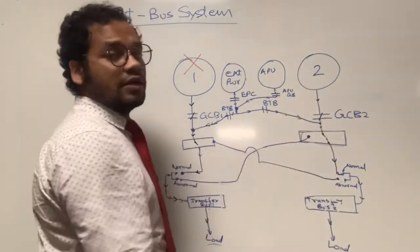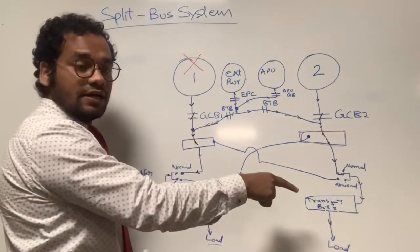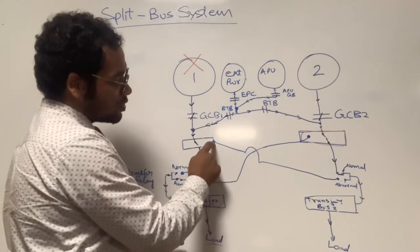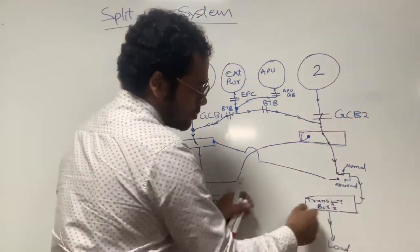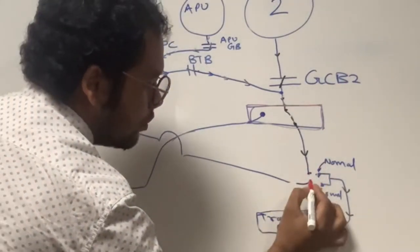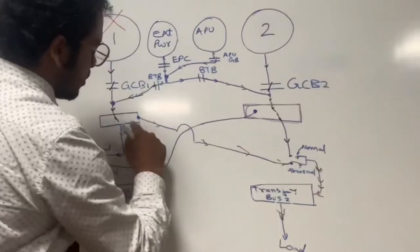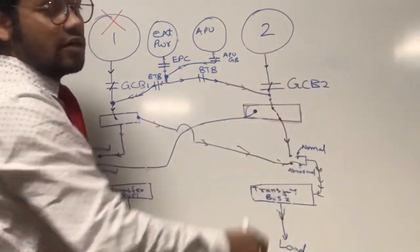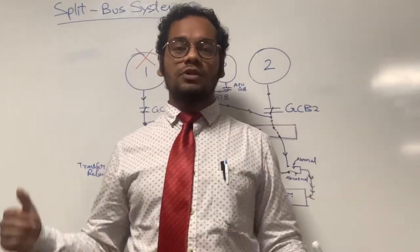That means number two generator feeds both sides when number one side is lost in flight. Likewise, if number two side generator were lost, the transfer relay on the number two side would shift to abnormal position, and current from the number one generator main bus bar would flow to the number two side, powering both the normal number one side loads and the failed number two side loads.